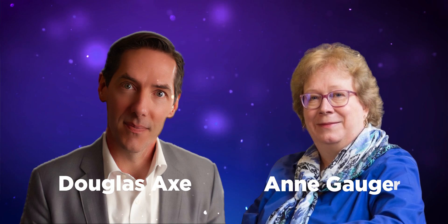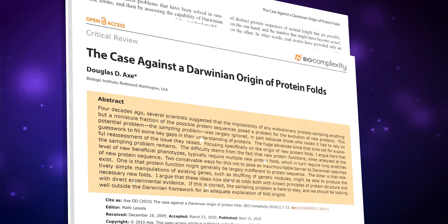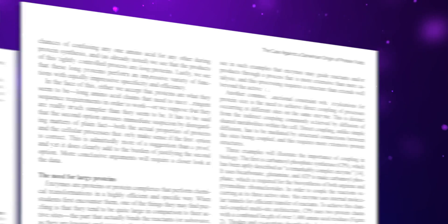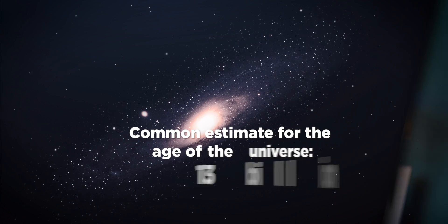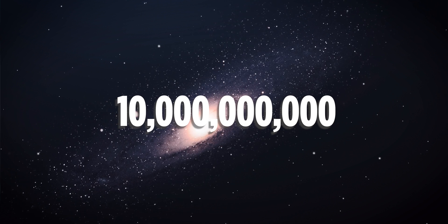Molecular biologist Douglas Axe and colleague Ann Gauger explored the possibility that one particular protein could evolve from another similar one, based on just a handful of necessary changes to DNA, and found that at currently understood rates of mutation, it would take 10 to the 27 years for such a change to take place. That's a 1 followed by 27 zeros — impressive given that scientists think our universe is only 13 billion years old, or about a 1 followed by 10 zeros.